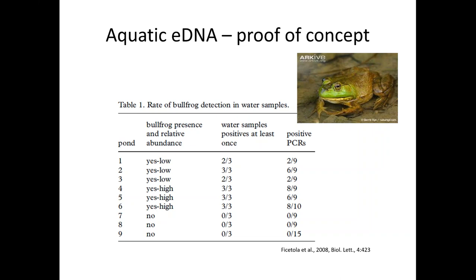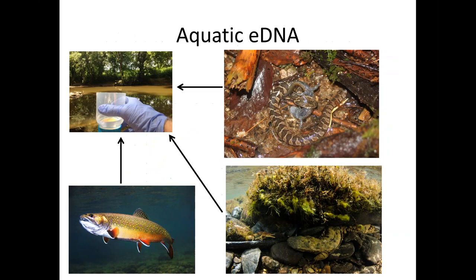This was really the first paper that generated the field of aquatic eDNA for herps and spurred a whole lot of studies. It showed that with just a cup of water you can potentially detect all sorts of members of an aquatic community — things like water snakes, hellbenders, crayfish, trout, and even deer if they're drinking from the water source and their saliva enters the water.